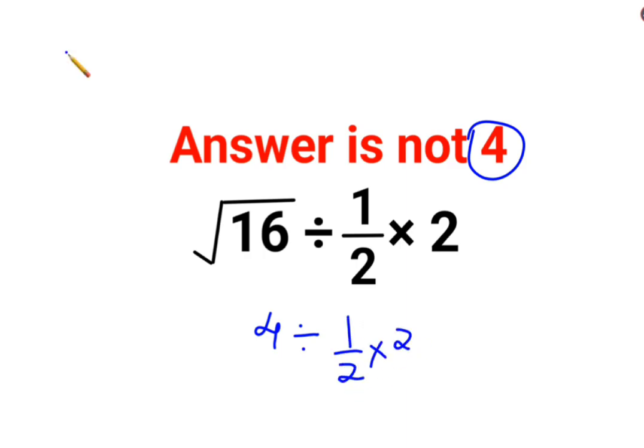Now in these cases, please remember division and multiplication always hold equal precedence. So in sums like these, you will go from left to right. Whatever operation happens first on your left hand side has to be done first.